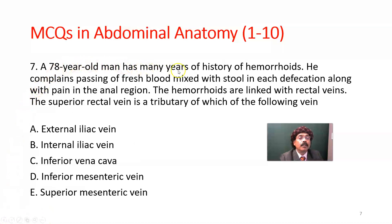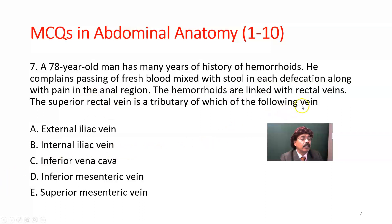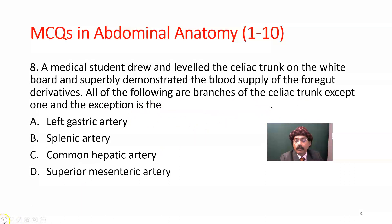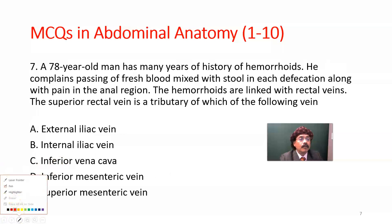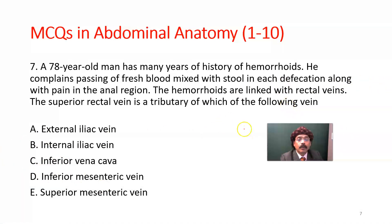Question number six: A 78-year-old man has many years of history of hemorrhoids (also called piles). He reports passing fresh blood mixed with stool at each defecation, along with pain in the anal region, especially aggravated with constipation. Hemorrhoids are linked with rectal veins. The superior rectal vein is a tributary of which vein?